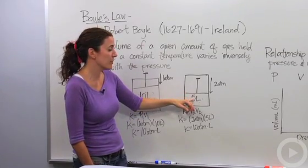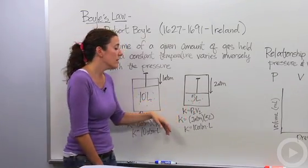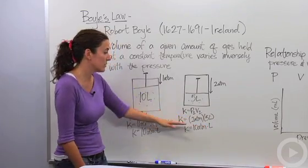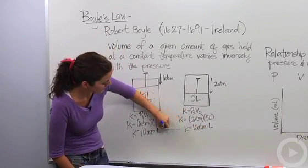There is a relationship between the pressure and the volume of the container, as long as the temperature is constant. If we multiply these, we get the same thing as before, 10 atmosphere liters. Notice that P1V1 equals P2V2.